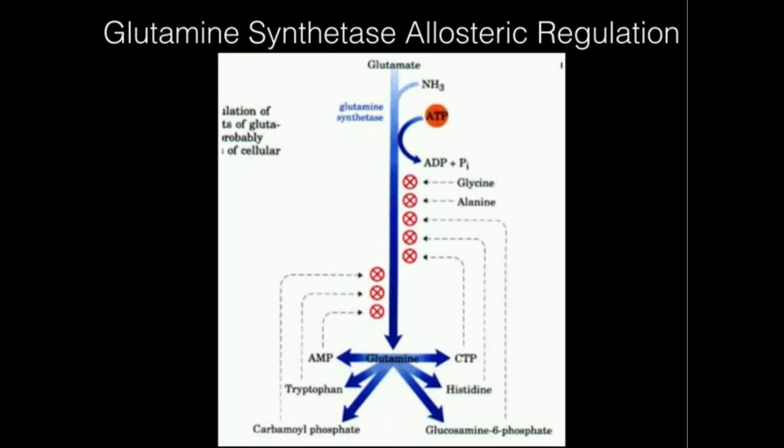Glutamine synthetase's reaction is to convert glutamate to glutamine, and that reaction is going to consume two molecules: ATP and ammonia.